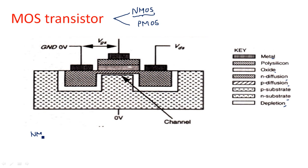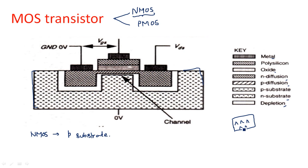For the NMOS transistor we consider a P-type substrate. The rectangular box completely shown here is the substrate, which is of P-type. Each and every layer has a specific representation in the MOS transistor — you should follow this representation whenever you are drawing that particular layer. The P-type substrate is represented with a cap-like pattern; whatever the shape, that representation indicates a P-type substrate.